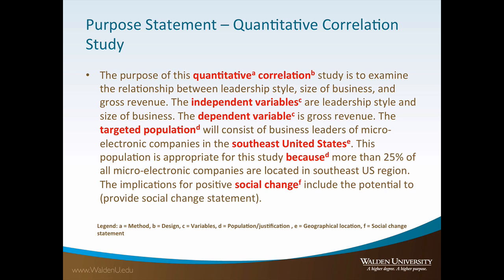Please take a moment to review the quantitative correlation purpose statement example. A lettered subscript is provided where the corresponding required rubric element is presented. However, notice in this example variables are included because quantitative studies must incorporate independent and dependent variables. It is vitally important that correlation designs examine more than one independent or predictive variable — simple bivariate correlations are not appropriate for doctoral-level studies.